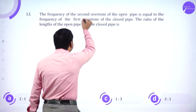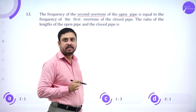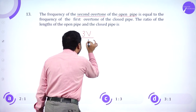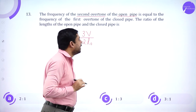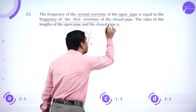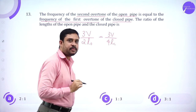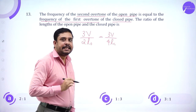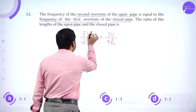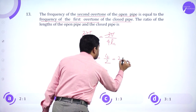The frequency of the second overtone of an open pipe is 3v/2L₀. This equals the frequency of the first overtone of the closed pipe: 3v/4Lc. So L₀/Lc = 4/2 = 2:1.